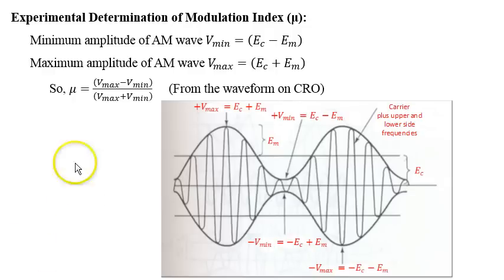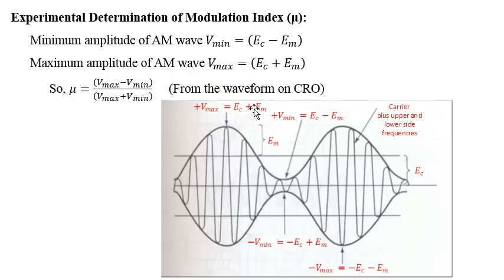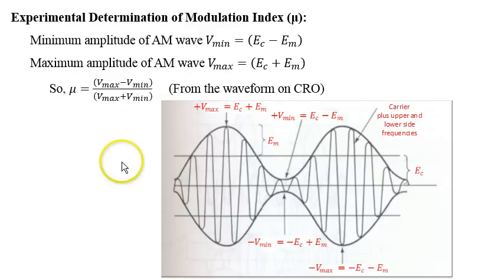If a waveform is available, we can experimentally determine the modulation index. From the modulated waveform, we can determine Vmin = Ec − Em and Vmax = Ec + Em. The modulation index μ can therefore be written as (Vmax − Vmin)/(Vmax + Vmin). By observing the waveform on a CRO, you can immediately measure the modulation index of the modulated waveform.